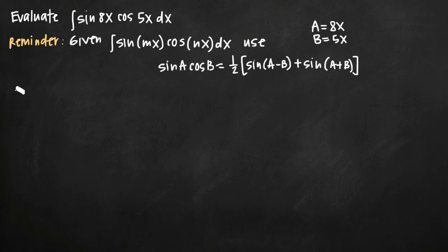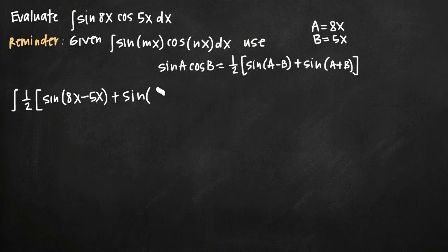So we're going to simplify this integral to 1 half, because we're following the right side of our formula here, so 1 half times sine of a minus b. So sine of 8x minus 5x, because we already identified a and b, plus sine of a plus b. So 8x plus 5x. And then we just want to simplify.